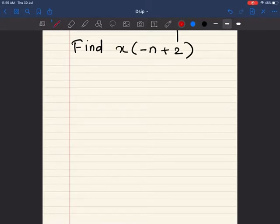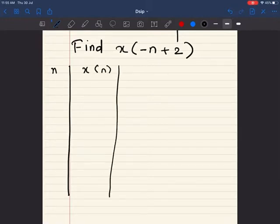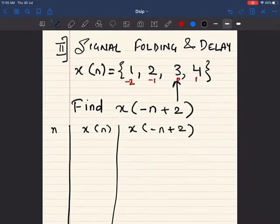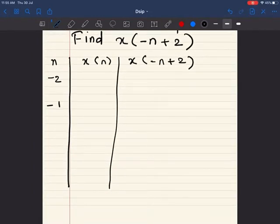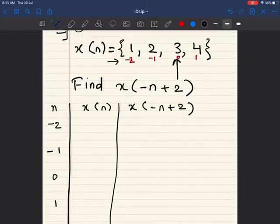Let us draw the table now. The first column is n, second column is x(n), and the third column is x(-n+2). What are the 4 values of n that we have? We have -2, -1, 0, and 1.